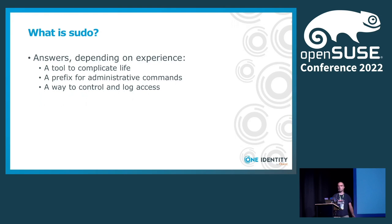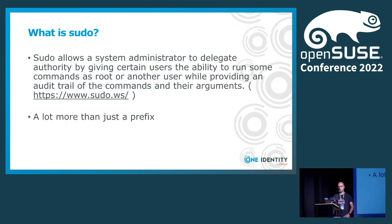Only a few people told me that sudo is a way to control and log access to your systems, and I could count on a single hand the people mentioning some of the advanced features of sudo. So, what is sudo according to the sudo website? It allows the system administrator to delegate authority by giving certain users the ability to run some commands as root or another user, while providing an audit trail of commands and their arguments. As we will see, it's a lot more than just a simple prefix.